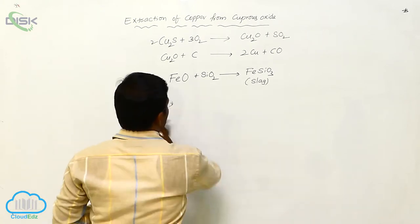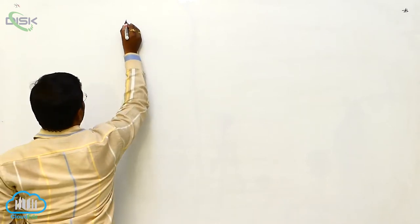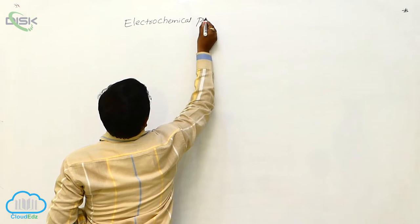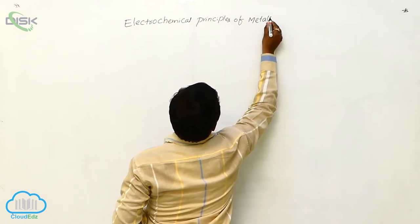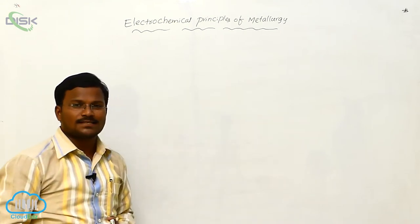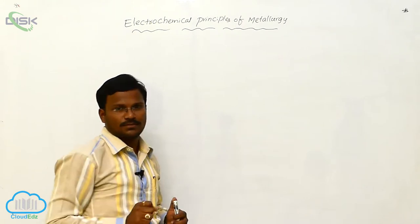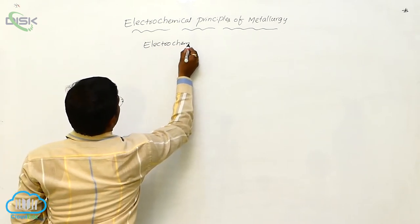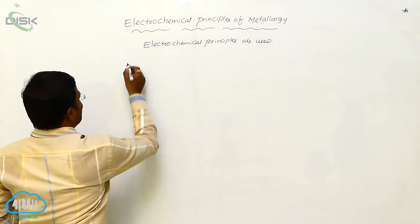This covers the isolation of copper and isolation of zinc. Next is electrochemical principles of metallurgy. After completion of thermodynamic principles, let us learn electrochemical principles of metallurgy. Electrochemical processes are very important to extract metals from their metal ores, and electrochemical principles are used in these processes.